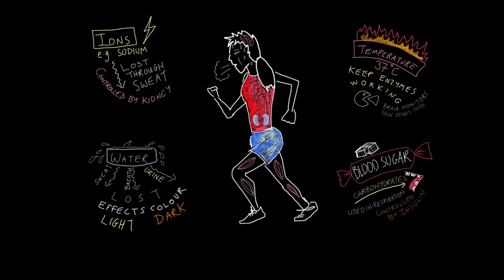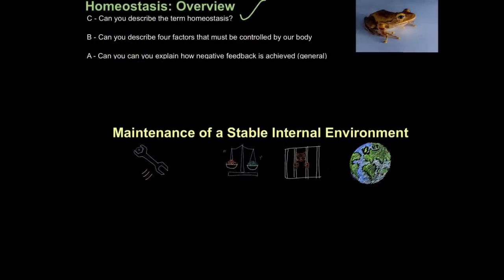So just to tie it all in together, remember as this runner is running their ion levels are going down because they're sweating. Their water levels are going down because they're sweating and expelling a lot of breath. Their body temperature is going up because as their muscles contract and carry out respiration it releases body heat. And of course their blood sugar levels are going down as they're using more glucose for respiration to power their muscles. Now obviously the body can't go on like this forever and that's why some athletes have been known to collapse from exhaustion. But our body does have a remarkable way of adapting to all these changes at least for a short period of time to keep us alive. For specifics on this you will need to look at other tutorials on homeostasis. As I said this is just an overview and that is how you describe the four factors that must be controlled by our body.